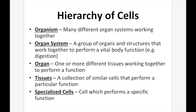From that there are going to be tissues. A tissue by definition is a collection of similar cells that perform a particular function — for example, a bunch of muscle cells. Then we have organs, which are one or more different tissues working together to perform a specific function, like the heart. Then we have an organ system: a group of organs and structures that work together to perform a vital body function, such as digestion. And then we have the organism at the top of the hierarchy, having many different organ systems working together.